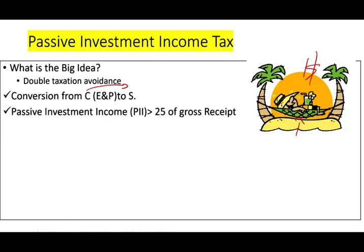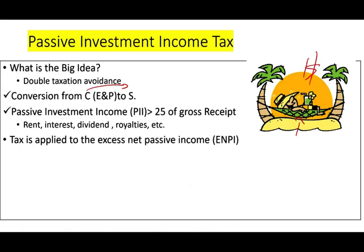This tax exists when you have a conversion from C to S and you have passive investment income. For any particular year, the passive investment income must exceed 25% of gross receipts — it's not only that you have passive investment income, the income must be substantial. Passive investment income includes rent, interest, dividends, and royalties — basically, you are sitting doing nothing and money is coming to you. The tax is applied to something called the Excess Net Passive Income, or ENPI.